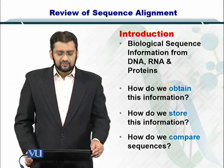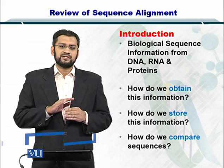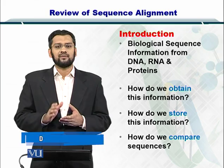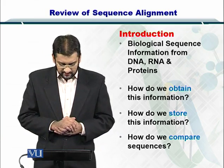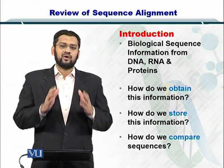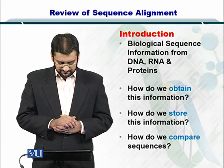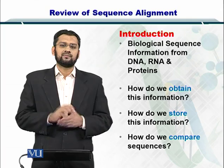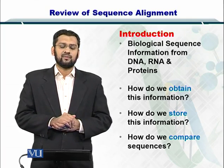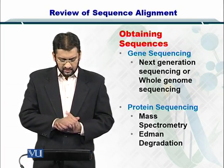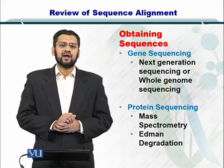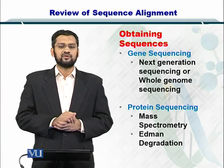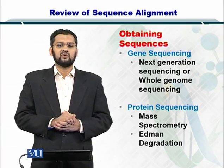How we obtain this information is very important. For genomes and RNA, we do next generation sequencing or whole genome assembly, while for proteins we do Edman degradation or mass spectrometry. To obtain the sequences, you may have to do certain experimental protocols which involve next generation sequencing for obtaining genome sequences. For protein sequences, you may go the route of mass spectrometry.